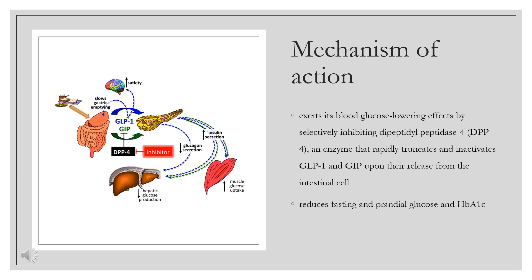Incretin hormones also exert extra-pancreatic effects, such as lipogenesis and myocardial function. In type 2 diabetes mellitus, GLP-1 secretion is impaired, and the insulinotropic effect of GIP is significantly diminished. Vildagliptin exerts its blood glucose-lowering effects by selectively inhibiting DPP-4, an enzyme that rapidly truncates and inactivates GLP-1 and GIP upon their release from the intestinal cells. DPP-4 cleaves oligopeptides after the second amino acid from the N-terminal end. Inhibition of DPP-4 substantially prolongs the half-life of GLP-1 and GIP, increasing the levels of active circulating incretin hormones.